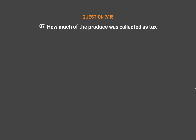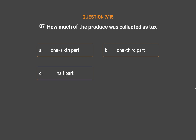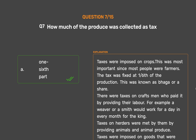Question No. 7. How much of the produce was collected as tax? Option A: One-sixth part. Option B: One-third part. Option C: Half part. Option D: One-fifth part. The correct answer is Option A: One-sixth part. Taxes were imposed on crops — this was most important since most people were farmers. The tax was fixed at one-sixth of the production, known as bhaga or a share. Taxes on craftsmen were paid by providing their labor; for example, a weaver or a smith would work for one day every month for the king. Taxes on herders were met by providing animals and animal produce, and taxes were also imposed on traded goods and forest produce.